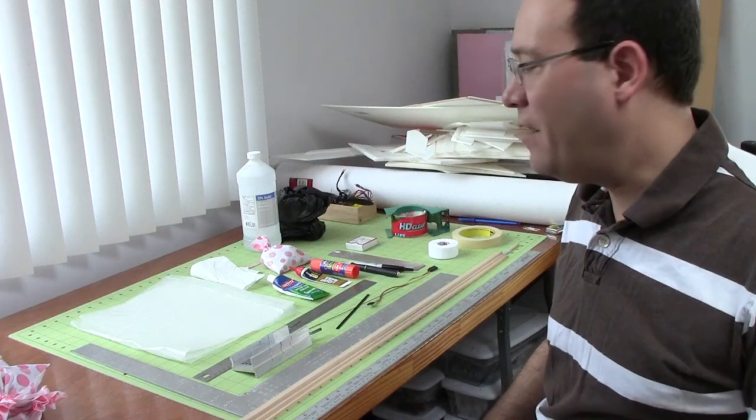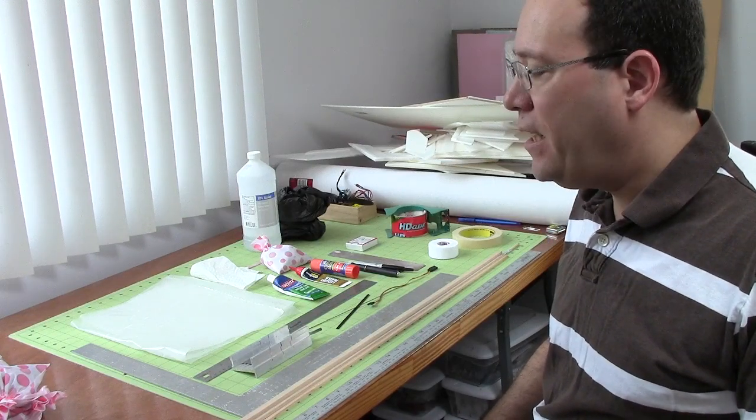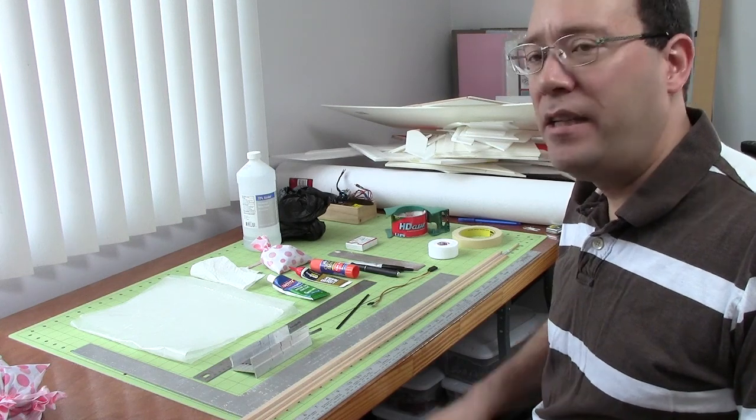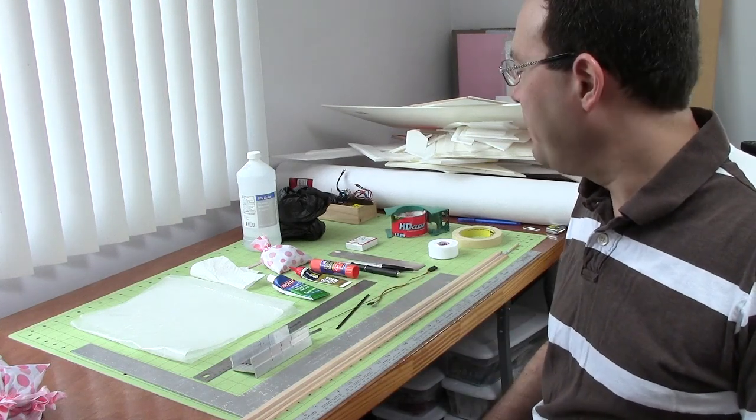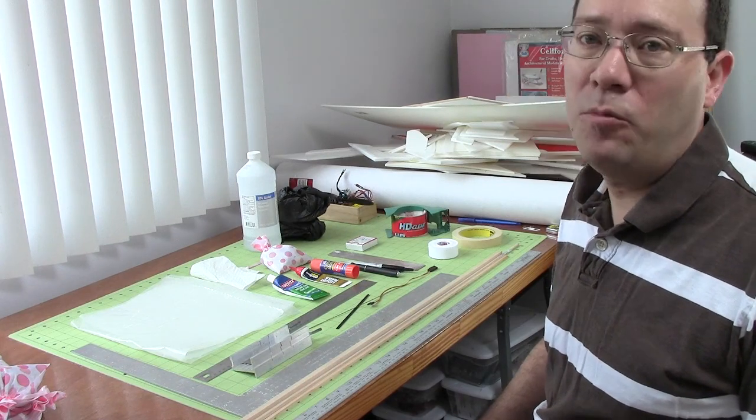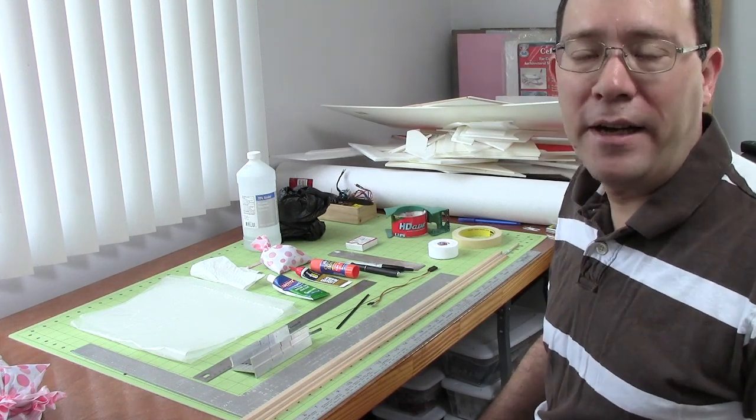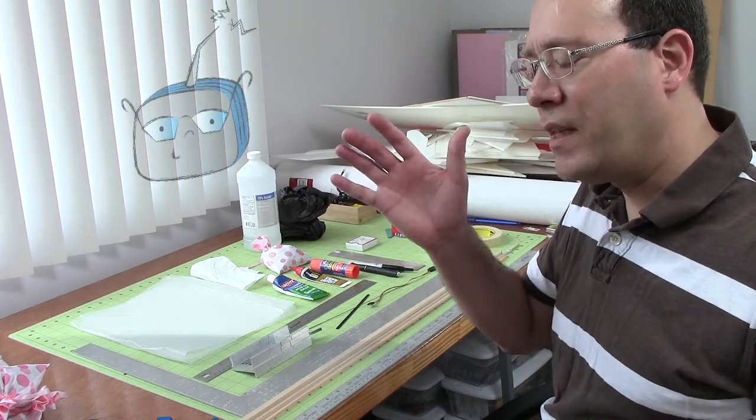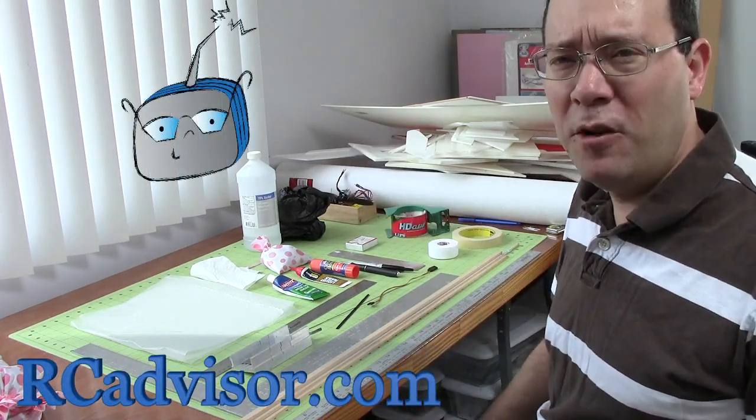Hi, this is Carlos from RC Advisor. This is the beginning of the build series of videos for the Piccolo design, which is a half pound joint wing foam flyer that's very maneuverable.